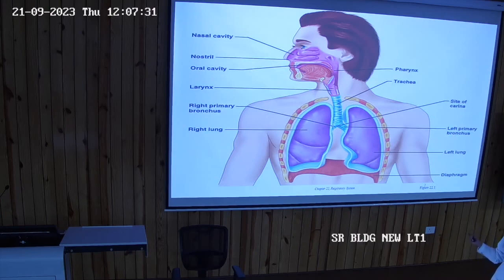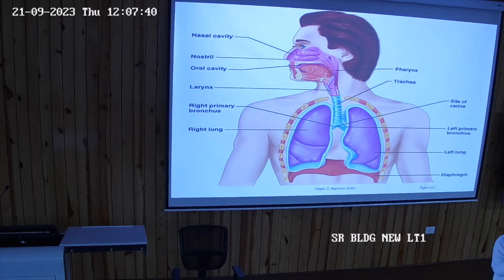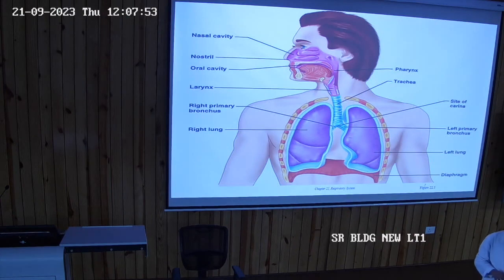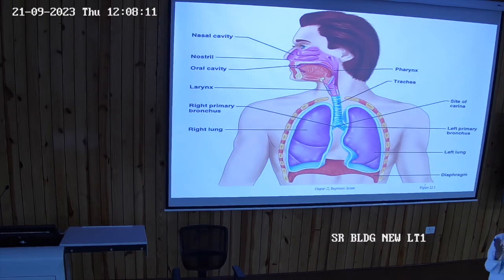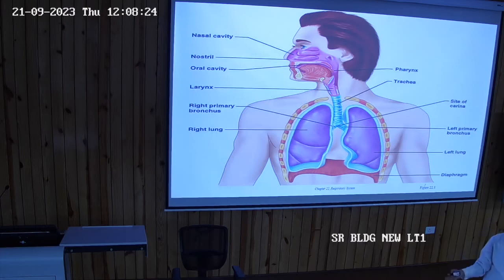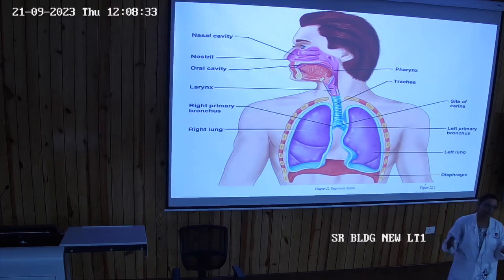There are three lobes in the right lung and two lobes in the left lung. Accordingly, there are three secondary bronchi for the right lung and two secondary bronchi for the left lung. After the secondary bronchi come the tertiary bronchi, which correspond to the bronchopulmonary segments — a group of lung parenchyma that develops around the tertiary bronchus. There are ten bronchopulmonary segments in the right lung and eight or nine in the left lung.